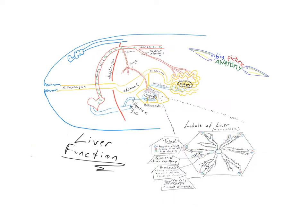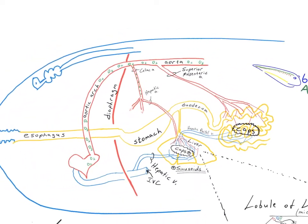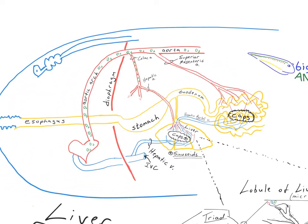Zooming in on the liver's place in the body, we can see that we have our gut tract with the esophagus leading to that J-shaped stomach, the C of the duodenum, and then the big bolus — the rest of the small intestines — and the liver coming off of the C of the duodenum, attached to it by the common bile duct.